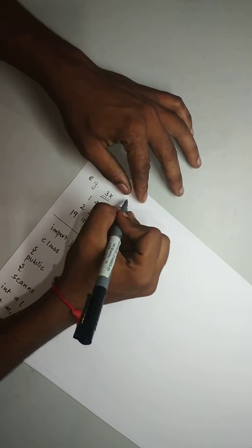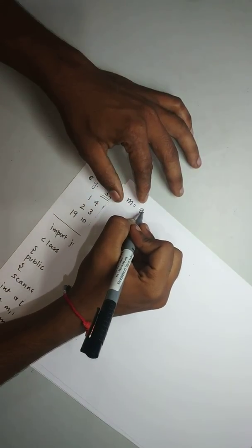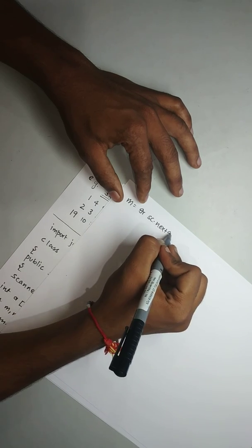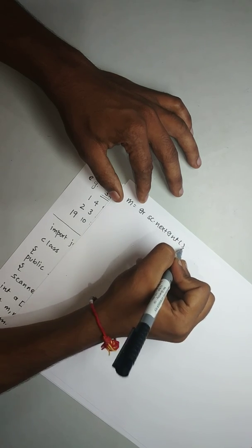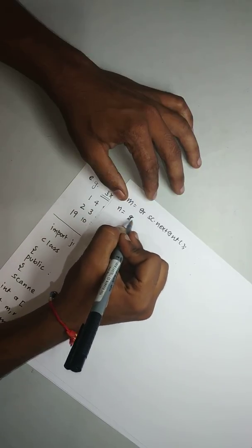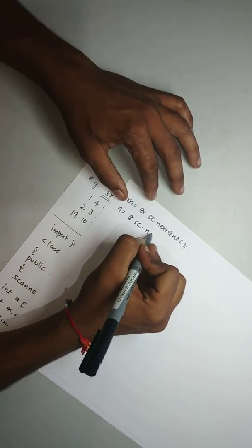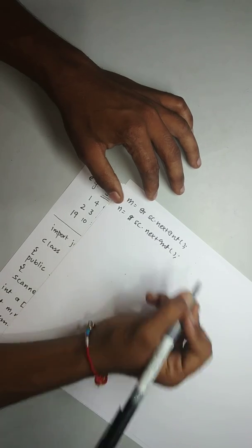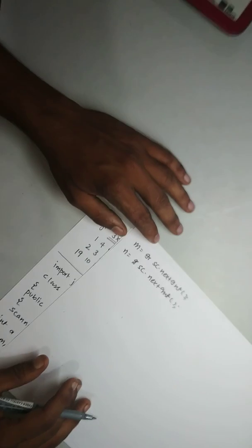So let's move to the next page. m is equal to sc.nextInt user entry of the first dimension. Then n is equal to sc.nextInt number of columns. After accepting the values a of m and n.